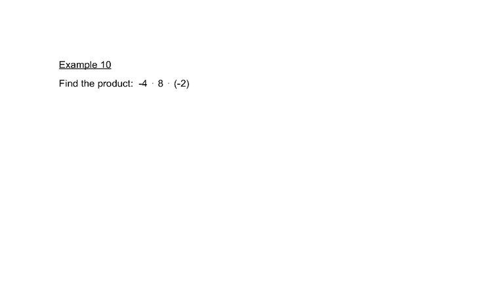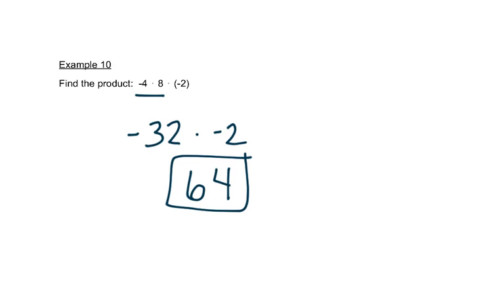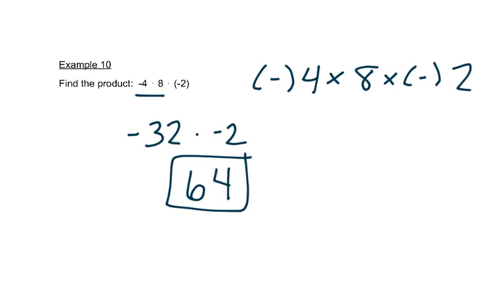Now let's look at multiplying. We can multiply these in order: negative four times eight is negative thirty-two, times a negative two. A negative times a negative is a positive, so we really have thirty-two times two, which is sixty-four. You can put that all in your calculator at the same time — type in negative four times eight times negative two, putting parentheses around the negatives as that's the way it usually shows up on a calculator.